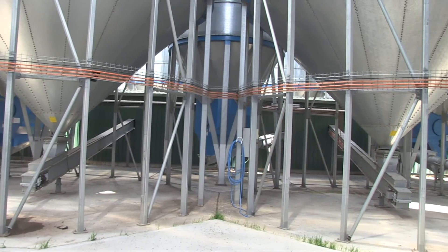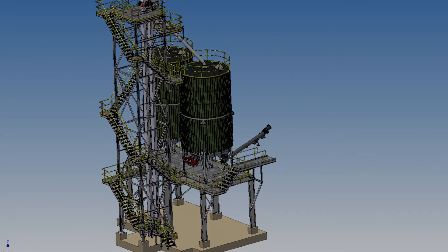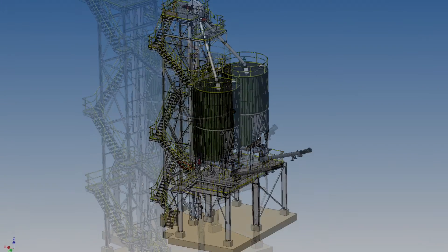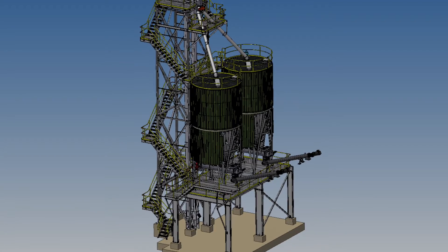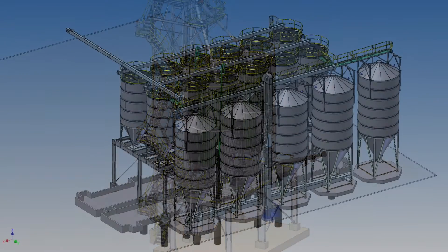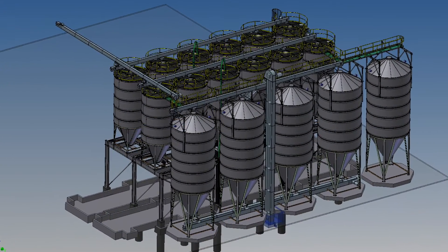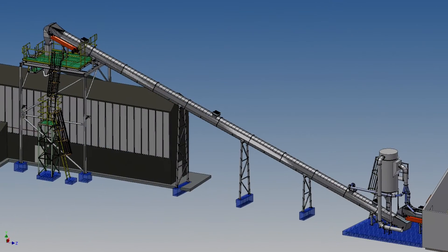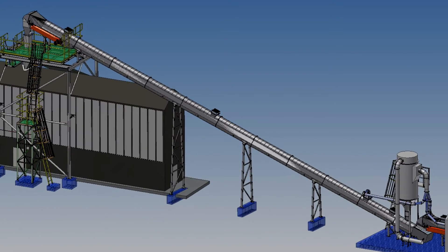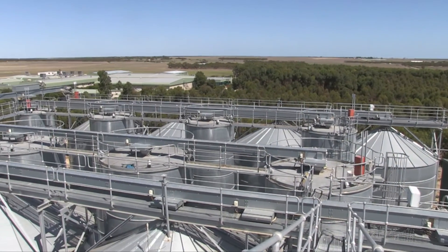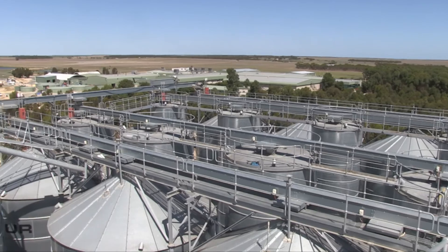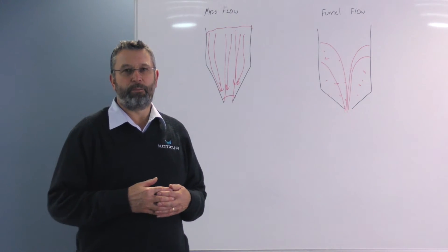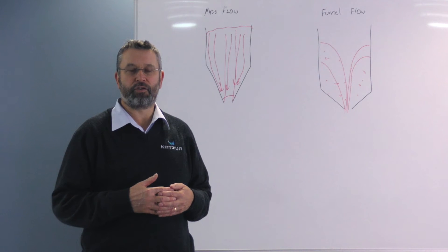Once we have this information, we can design the bin with the appropriate hopper angle, the appropriate hopper friction material, and the discharge geometry — it might be something like a plane-flow hopper with a screw discharger fitted underneath. Once we bring the whole puzzle together, we can provide a storage solution that we know will be reliable and provide good serviceability to the client.